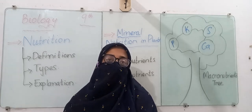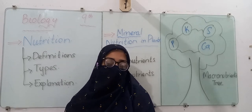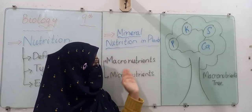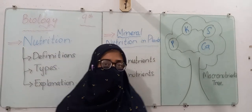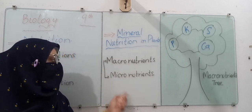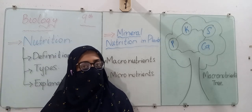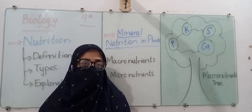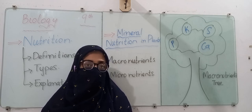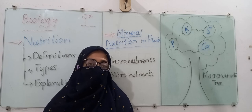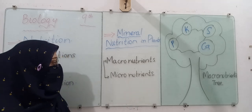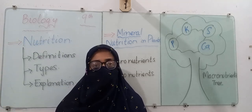Some nutrients are required in lesser quantities and others in higher quantities. So macronutrients and micronutrients are two different types of nutrients. The word 'macro' means higher or bigger, and 'micro' means lower or smaller. Macronutrients are those nutrients required by plants in large quantities — for example, carbon and hydrogen.